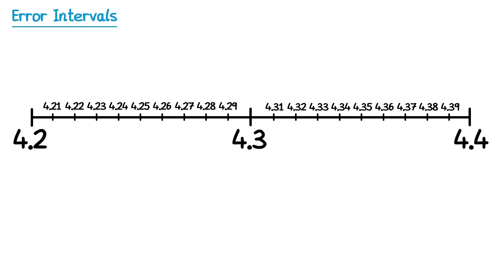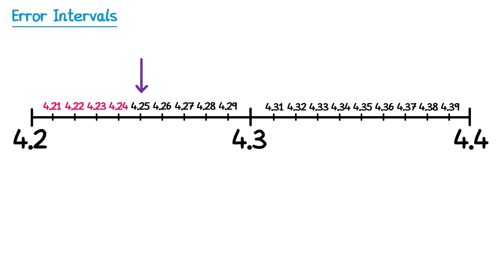So which of these would have rounded to 4.3? Starting on the left hand side: 4.21 would have rounded down to 4.2, so that one's no good. 4.22 and 4.23 and 4.24 would also have rounded down to 4.2, but when we get to 4.25 that one would round up to 4.3, and so would all of these numbers here.